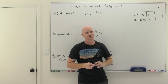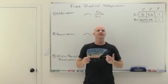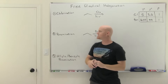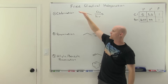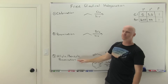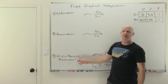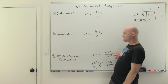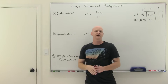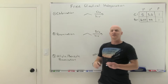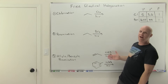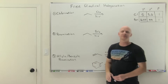Free radical halogenation is the first lesson in a chapter on radical reactions. In this lesson, we're going to go over chlorination and bromination, and pay lip service to what's called allylic or benzylic bromination using NBS. In the next lesson, we'll go through the mechanism of free radical halogenation. In the third lesson, we'll go through and talk about NBS specifically, including its mechanism.